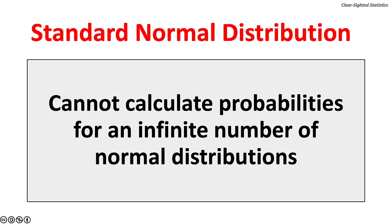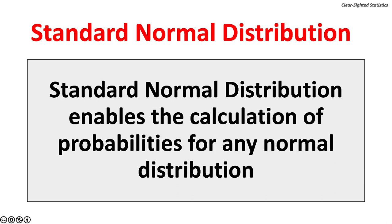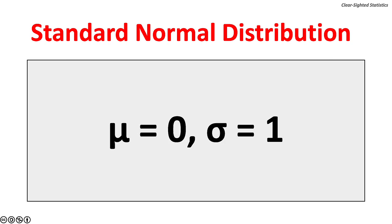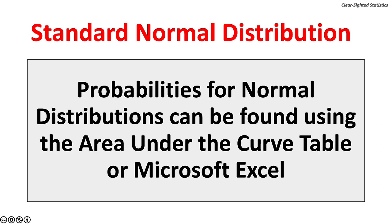We cannot calculate probabilities for an infinite number of normal distributions. The standard normal distribution enables the calculation of probabilities for any normal distribution. It has a population mean of 0 and a population standard deviation of 1. The area under the curve, or probabilities, can be found using the area under the curve table or statistical apps like Microsoft Excel. Excel provides more precise probabilities than the area under the curve table.